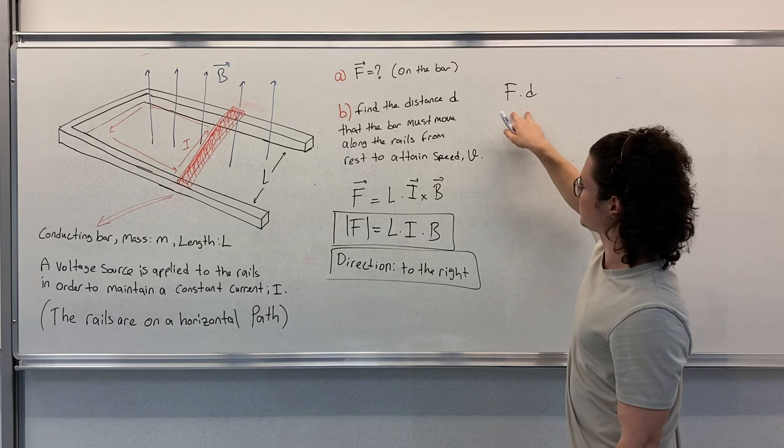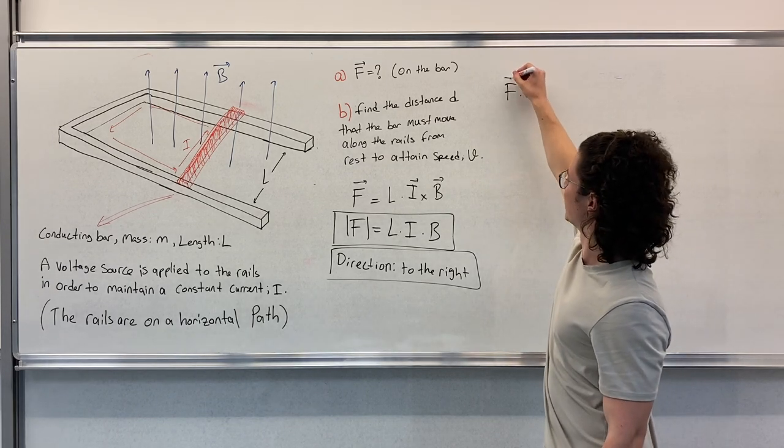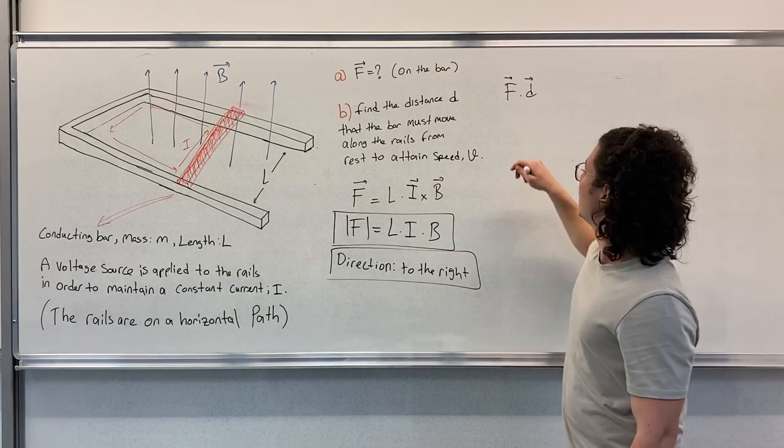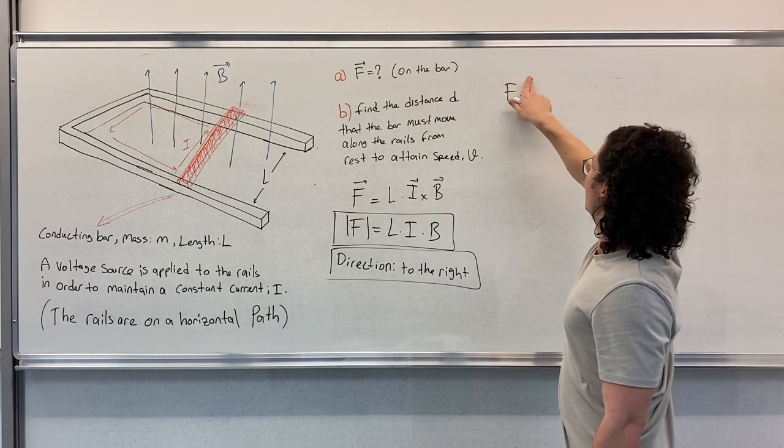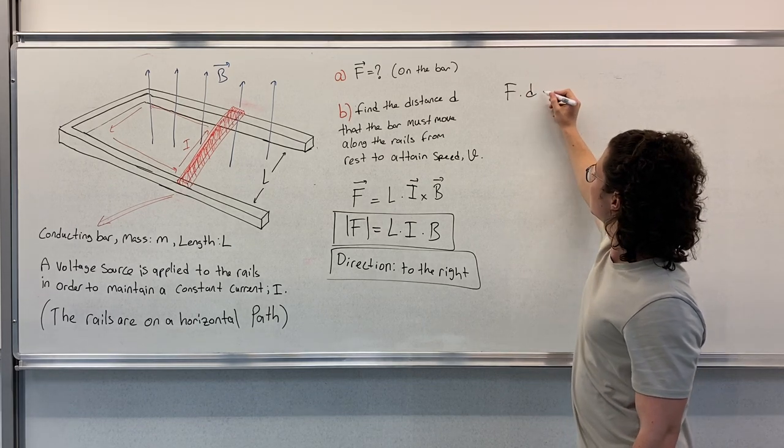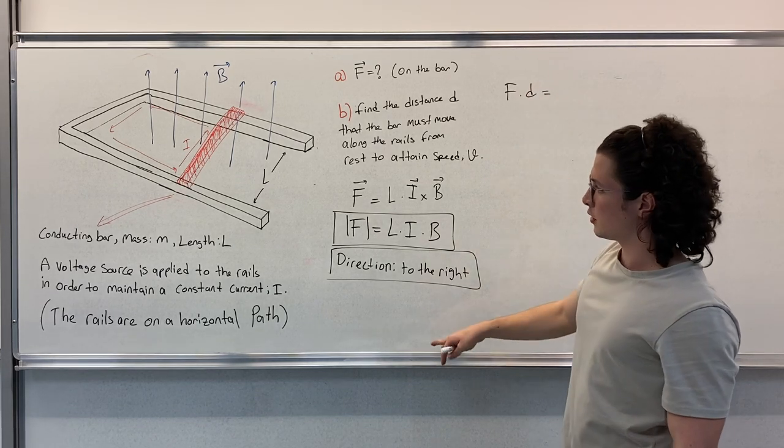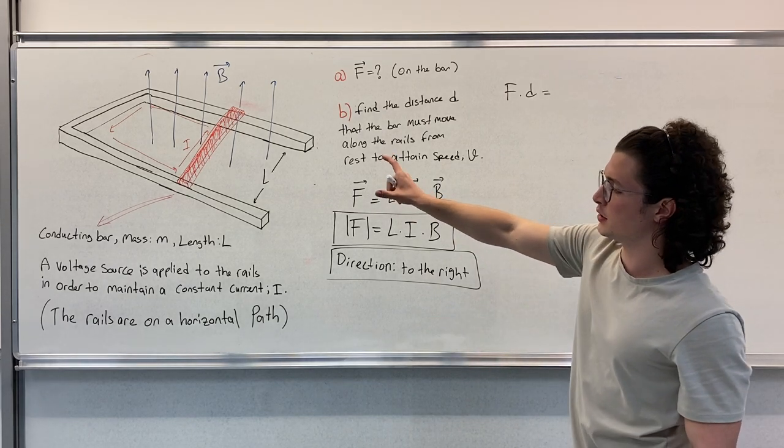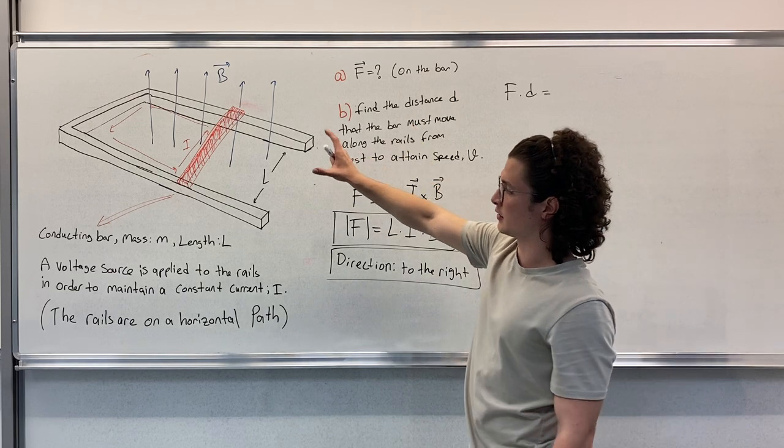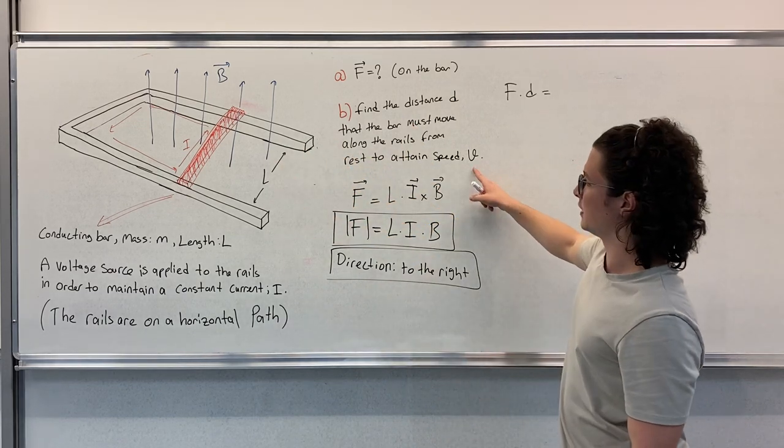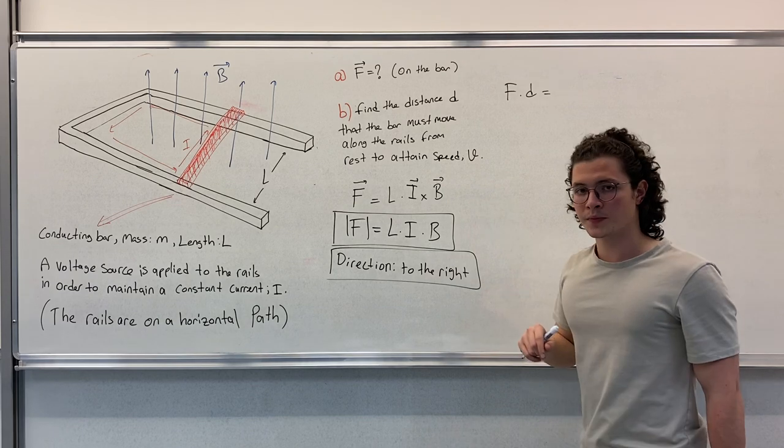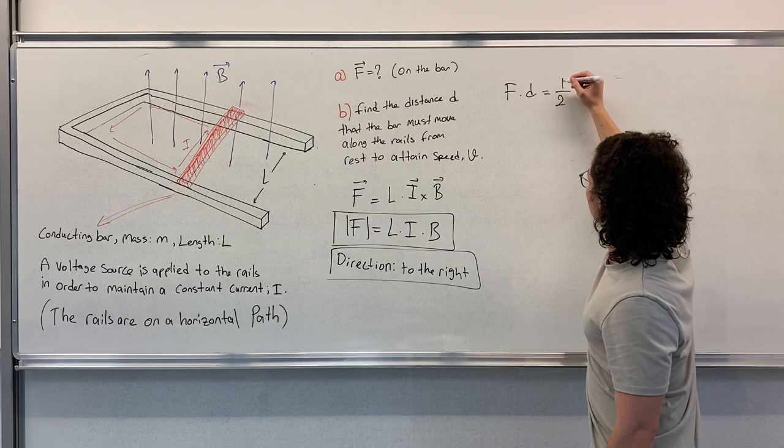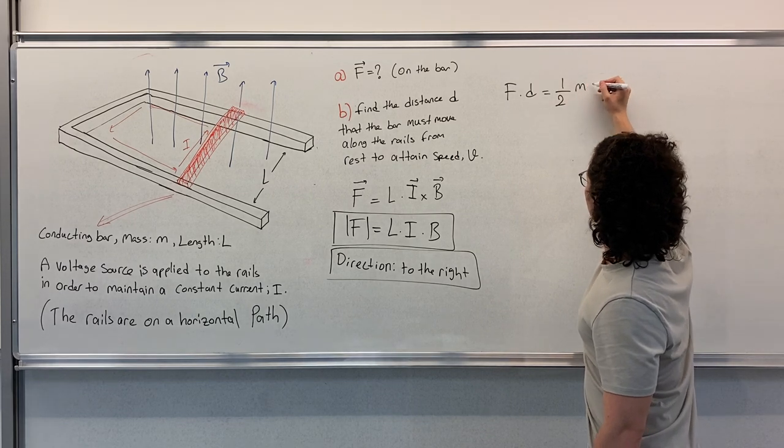This is the work done by this force - actually this is a dot product, but they're pointing in the same direction, so the dot product cancels. This equals the change in energy. Initially the bar was at rest, and finally it has velocity V. The kinetic energy is expressed as 1/2 M V squared.